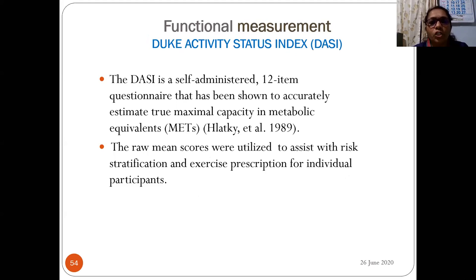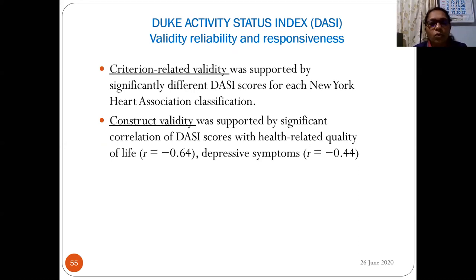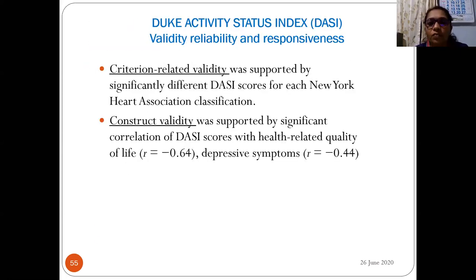Duke's Activity Status Index (DASI) is a self-administered 12-item questionnaire used for cardiac patients. It accurately estimates true maximal capacity in metabolic equivalent (MET) values. The raw score is used to assist with risk stratification and exercise prescription. Criterion validity is supported by significant differences in DASI scores across NYHA classifications. Construct validity is supported by significant correlation with health-related quality of life (r = −0.64) and depressive symptoms (r = 0.44).